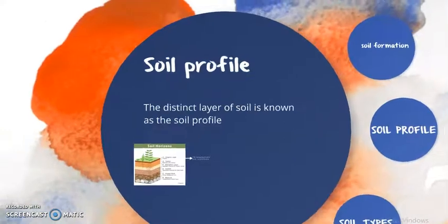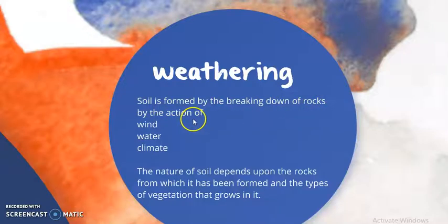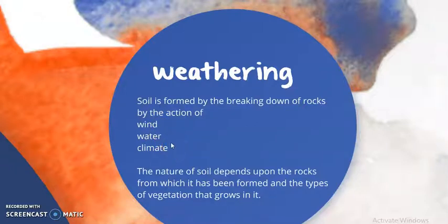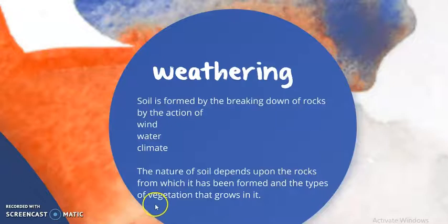After learning about the horizons, let's move to the topic of weathering. Weathering is a process by which soil is formed. Soil is formed by the breaking of the larger parent rock by the action of wind, water, and climate. These are the factors which cause soil formation. The nature of the soil depends on the type of parent rock, and depending upon that, the vegetation — the plants which grow in that particular area — will also be different according to the soil present.